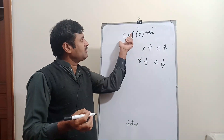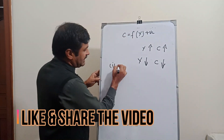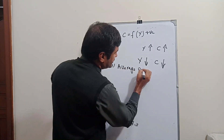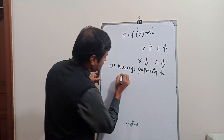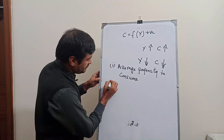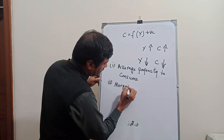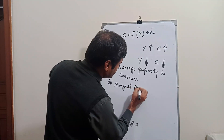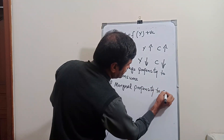There are two components of consumption function. The first is average propensity to consume, and the second is marginal propensity to consume.